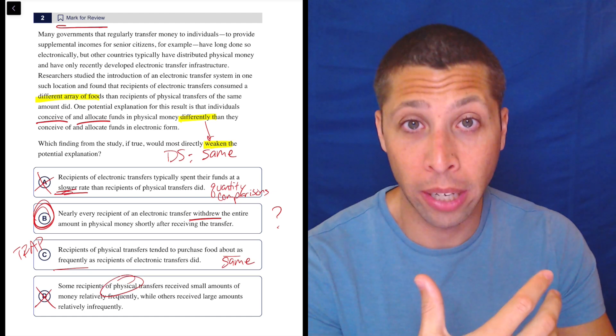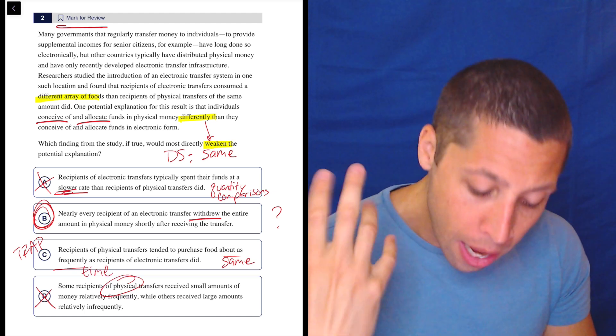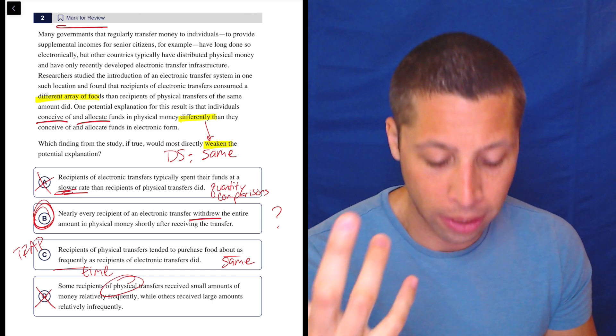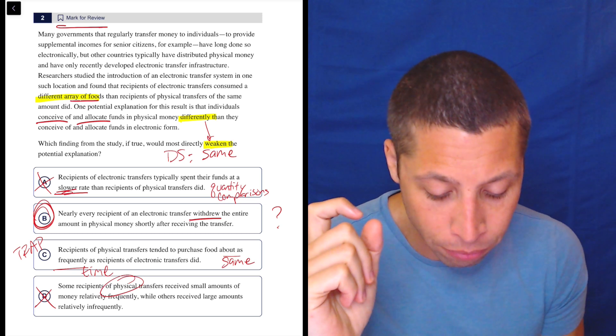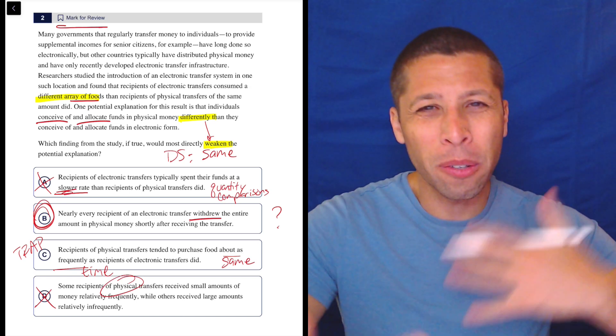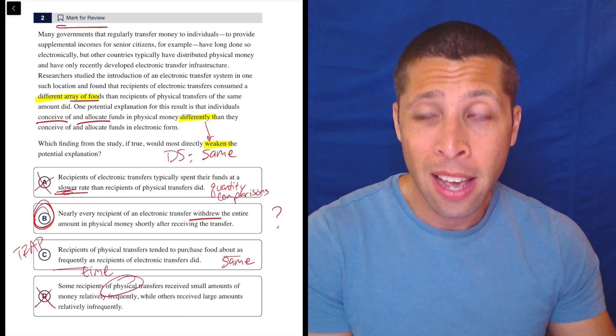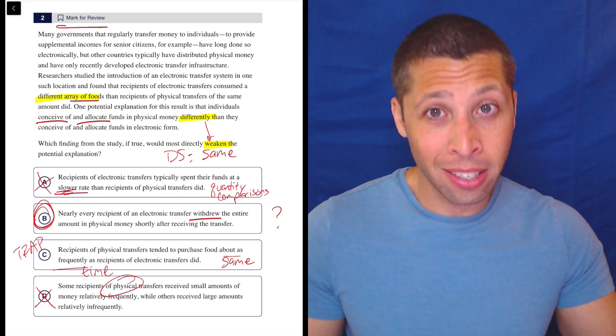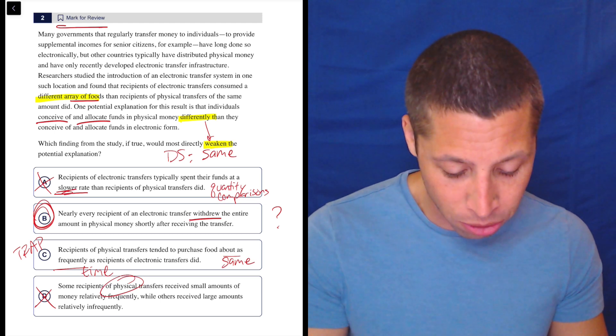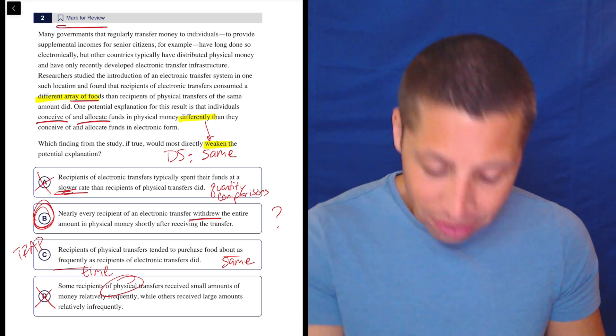Well, I guess one thing that I'm kind of ignoring in choice C is that they're bringing in the concept of time. But time doesn't seem to matter in the passage. They're not talking about how frequently they spend the money. They're talking about them spending money on different foods. A different array, a different variety of foods. So the rate is kind of not really part of this. And maybe that's almost the same reason that we got rid of A, though A is talking about different rates. This is talking about a similarity. So, you know, I don't know. It feels close to me.